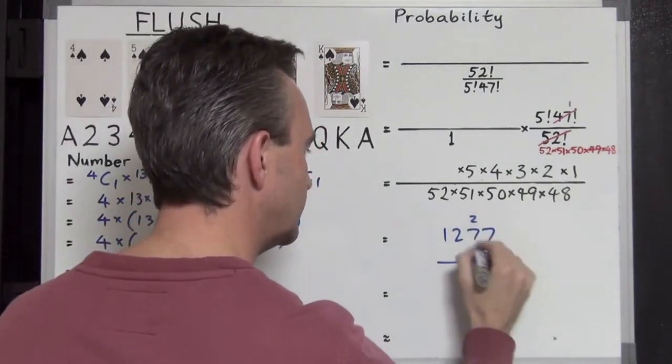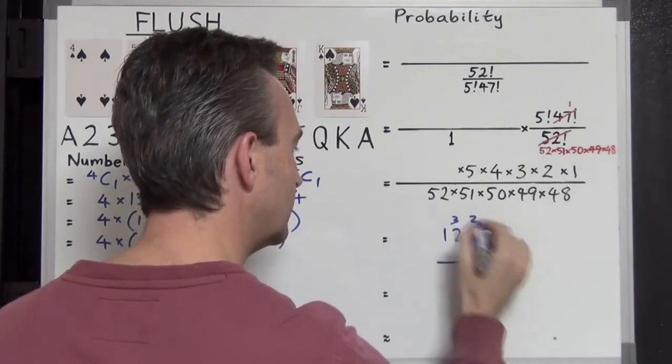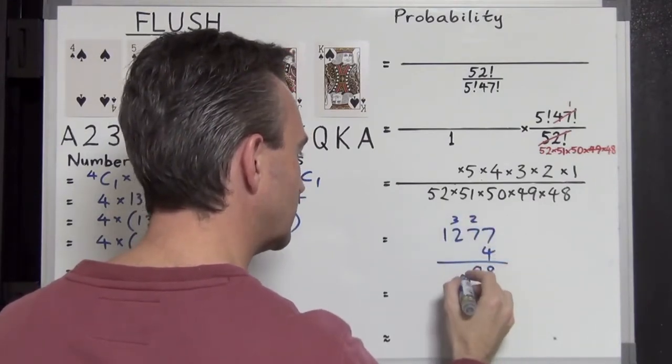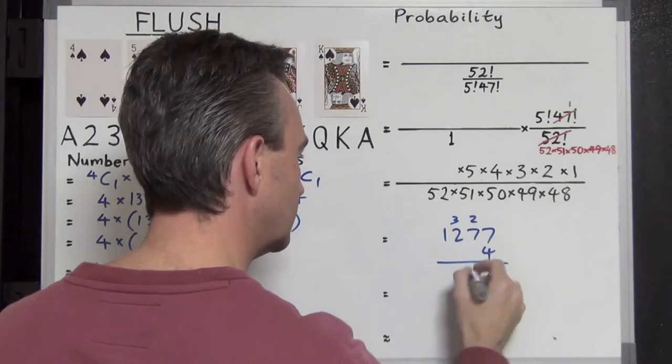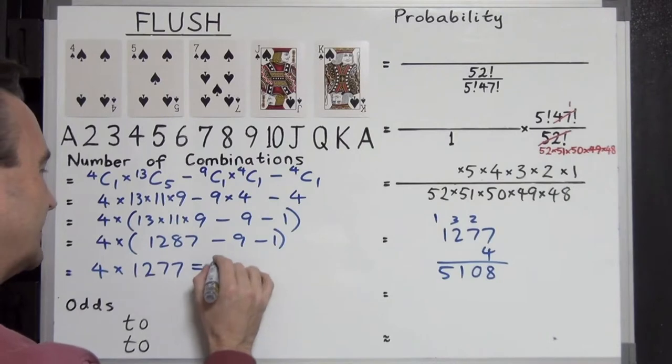And busting this out too. 7, 4's are 28. Carry the 2. 7, 4's are 28 again, carry the 2 again. 30. 2, 4's are 8, plus 3 is 11. And 1, 4 is 4, and plus 1 is 5. 5, 1, 0, 8 hands.